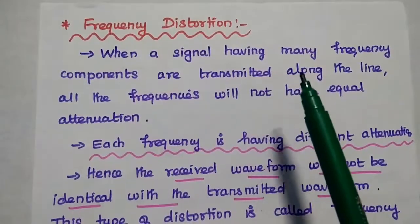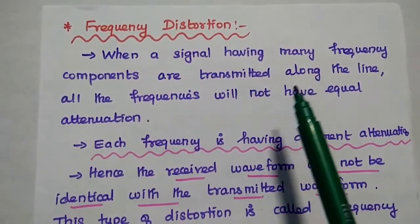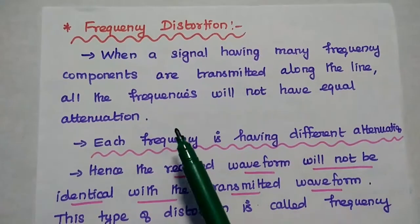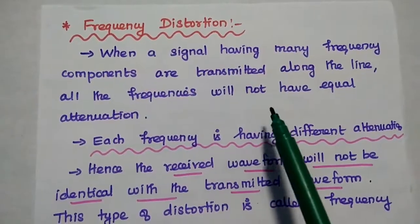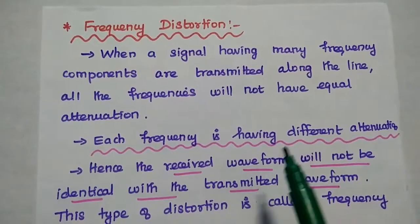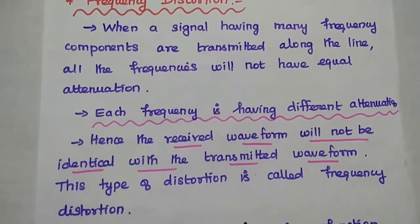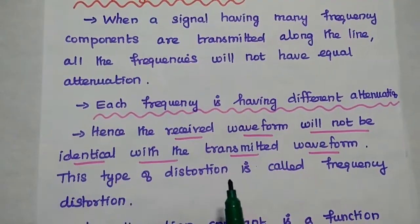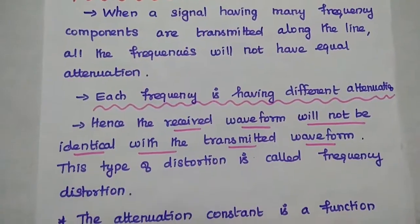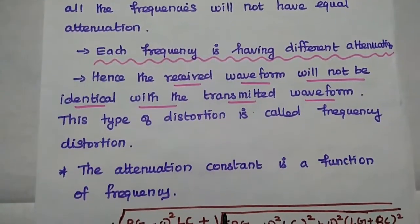The first type is frequency distortion. When a signal having many frequency components is transmitted along the transmission line, all the frequency components will not have equal attenuation. Each frequency has a different attenuation. Hence, the received waveform will not be identical with the transmitter waveform because of this different attenuation. This type of distortion is called frequency distortion.